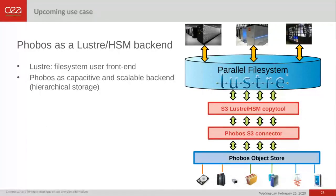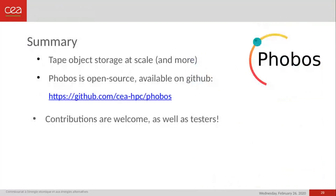Our last use case is using Phobos as a Lustre HSM backend. We massively use Lustre at CEA as a POSIX front end on our HPC cluster nodes, and we plan to use Phobos as a high-performance scalable archive backend. Phobos currently offers two solutions for connecting to a Lustre file system: a direct native Lustre copy tool, and the option to use existing Lustre-to-S3 copy tools through the Phobos S3 connector. Even though it is currently evolving fast, Phobos is already open source and available on GitHub — we'd be very happy if you download it, test it, give us feedback, and contribute.